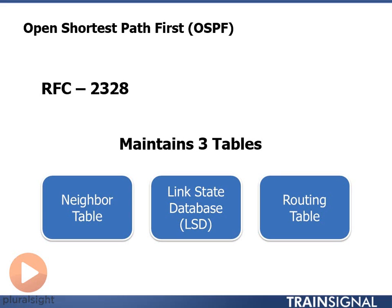The first table it creates is called the neighbor table. The neighbor table uses something called the hello protocol to build neighbor relationships. Just like when you move into a new house and go introduce yourself, shake hands, and exchange pleasantries to build good relationships — OSPF, being purely logical, is not concerned with pleasantries. It's more concerned with whether its neighbor is there and responding.